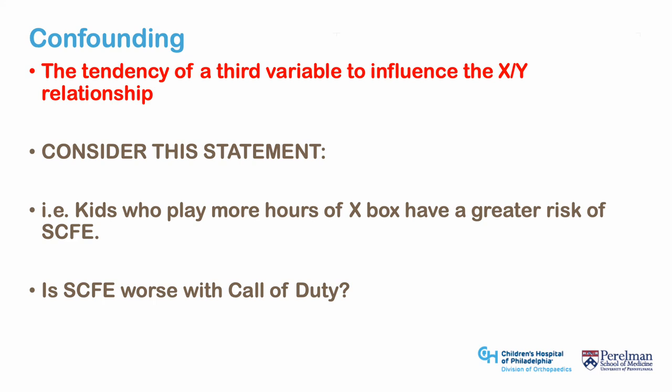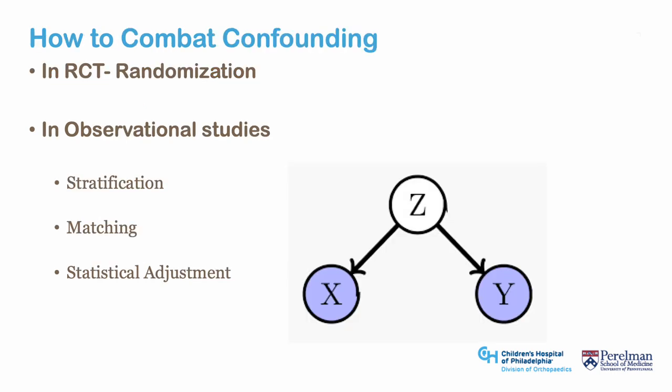Confounding is not necessarily bias per se, but it can heavily influence results in observational studies if not controlled for. By definition, confounding is the tendency of a third variable or second independent variable to influence the relationship of X to Y. Consider a study assessing the risk of Xbox use on the development of slipped capital femoral epiphysis (SCFE) in children. You might find that more hours of Xbox leads to higher likelihood of SCFE, but the true confounder is that children who play more video games are less sedentary and more likely to have weight problems — a known risk factor for SCFE. In randomized trials, randomization parses out confounders by random chance; the larger the sample, the more likely confounders will be equitably allocated.